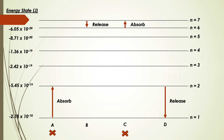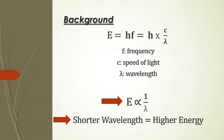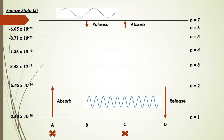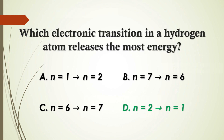You may think option D releases more energy since the arrow is longer, and in fact D is the correct answer. From the energy formulas, energy is proportional to frequency f, and f equals c over lambda (wavelength), meaning energy is inversely proportional to wavelength. A shorter wavelength produces more energy. Since lower energy levels have shorter wavelengths, the answer is D: n=2 to n=1.